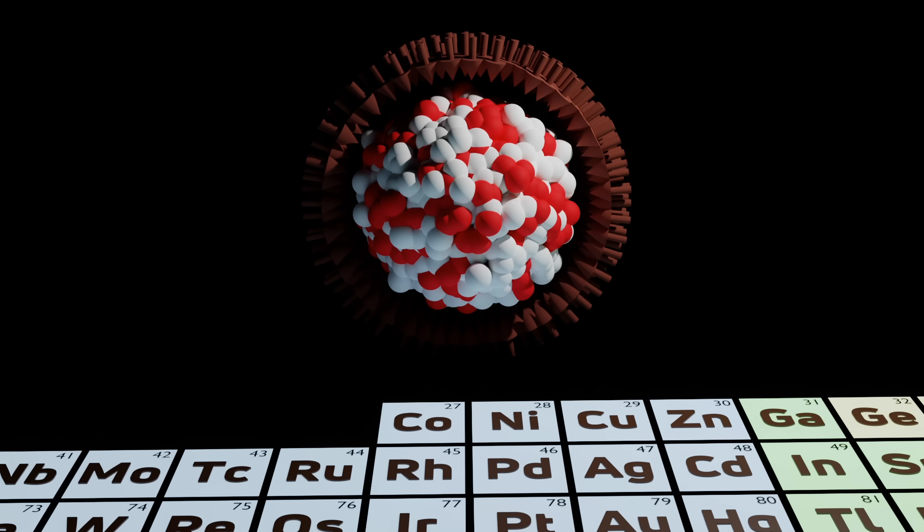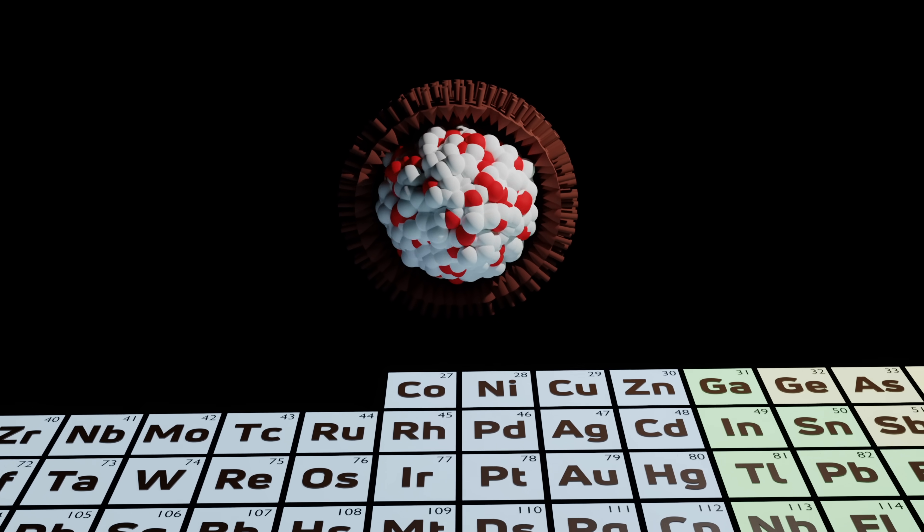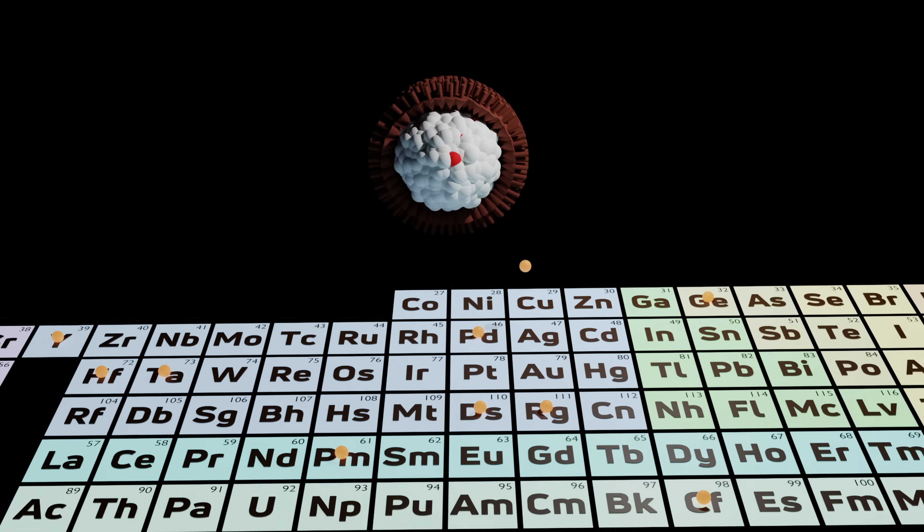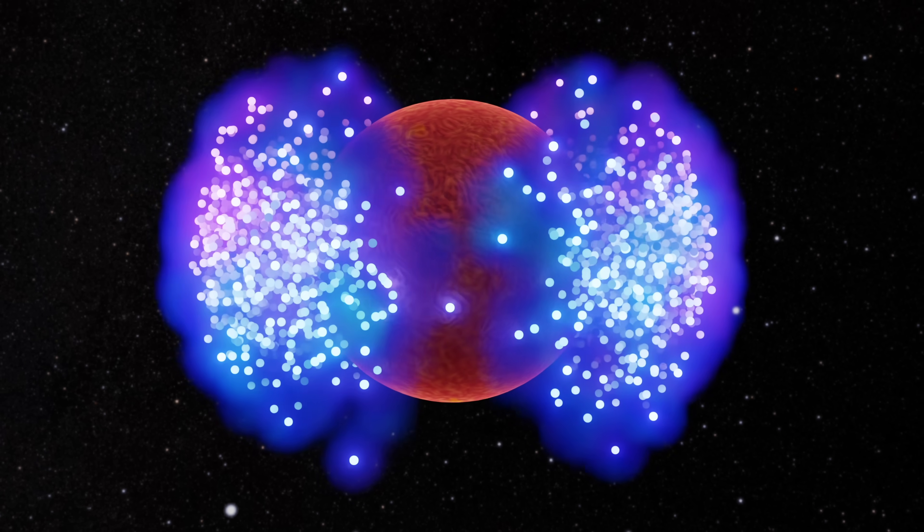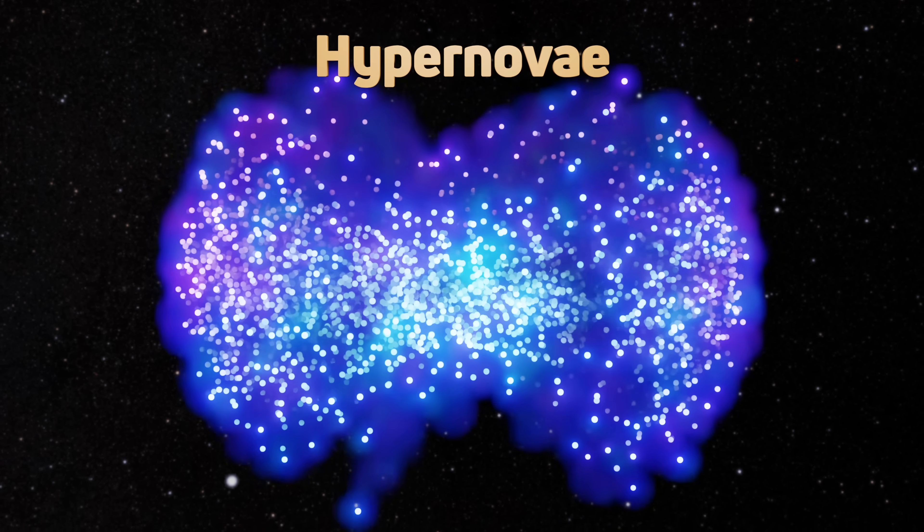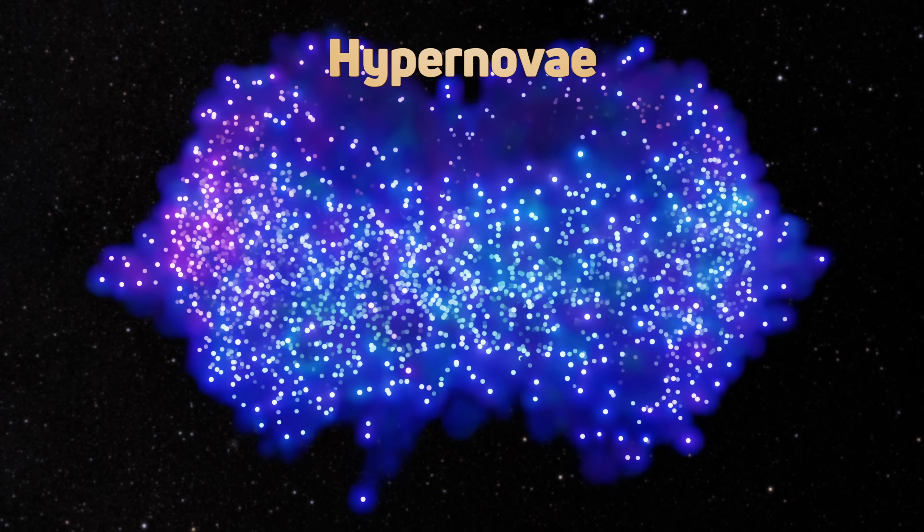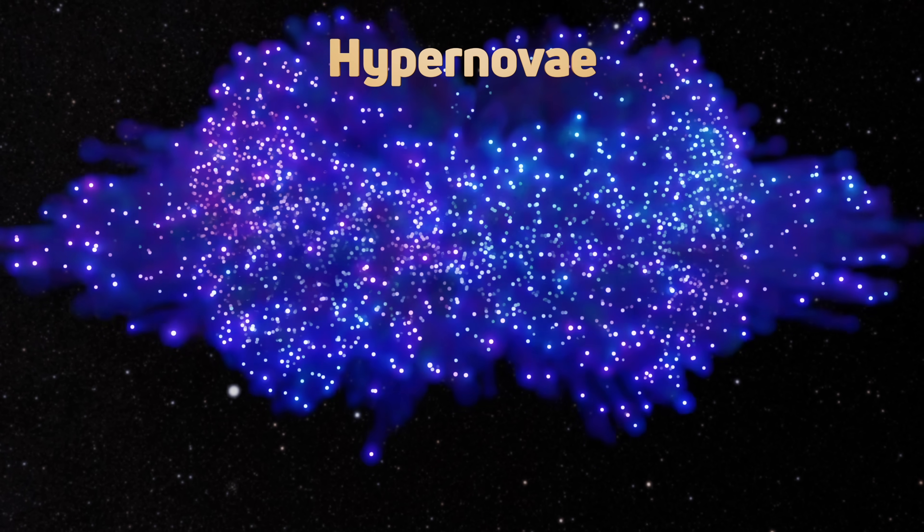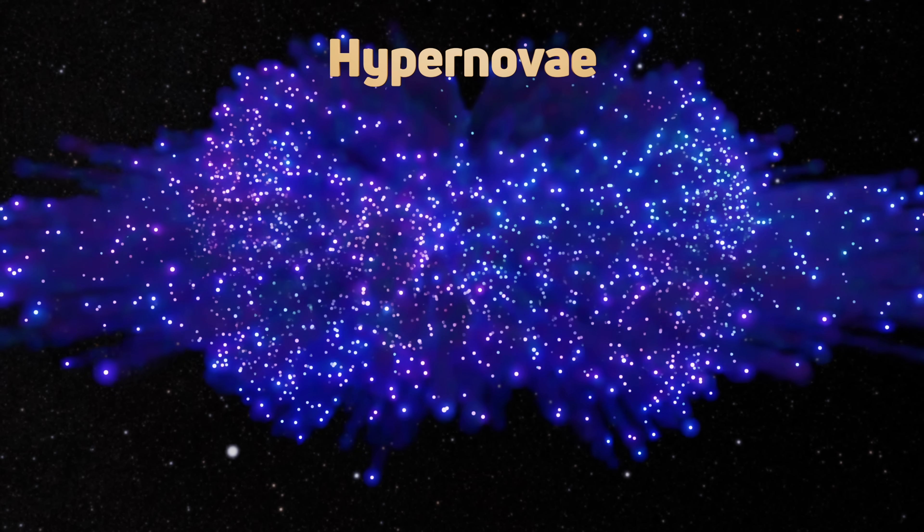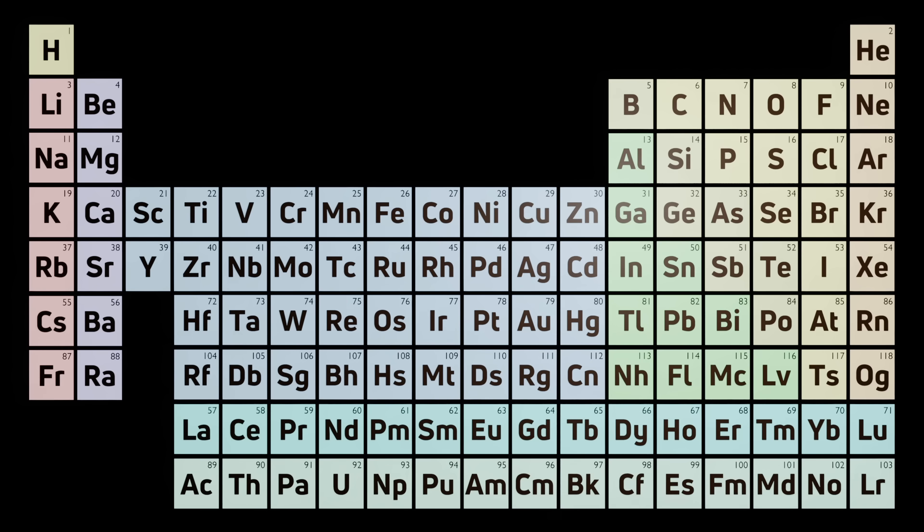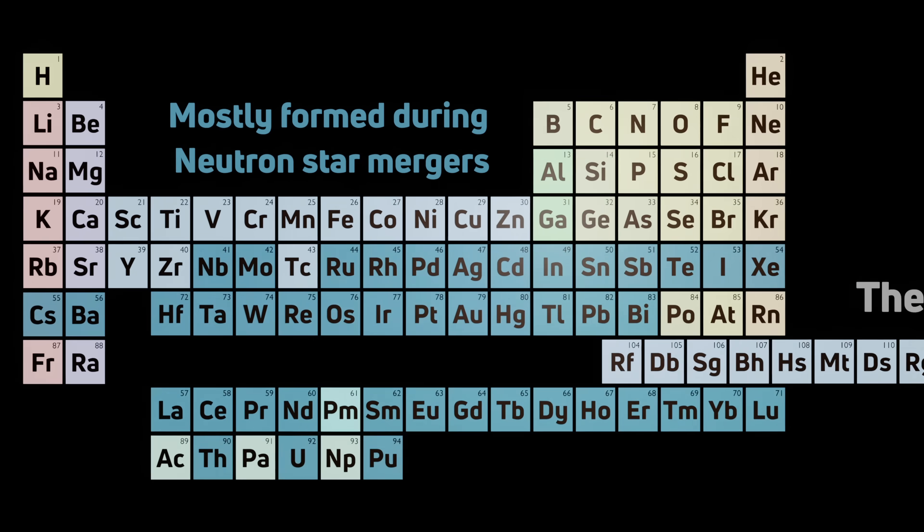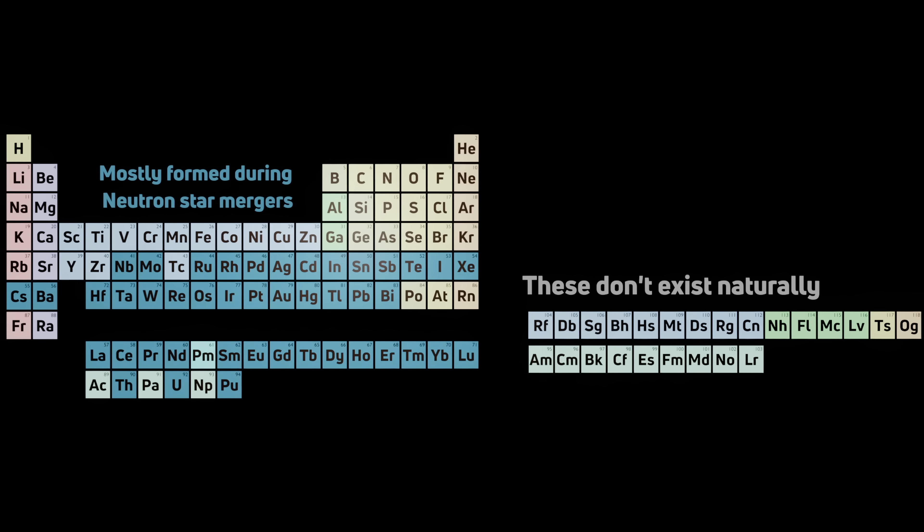Even though it's theoretically quite difficult to produce large amounts of these R process elements via supernovae, they likely produced some. Models suggest that fast-spinning, highly magnetized hypernovae can produce a modest amount of these large elements, and these may have been the source for some produced early on. But the evidence is trending towards most of our heaviest rare Earth elements forming during kilonova events.